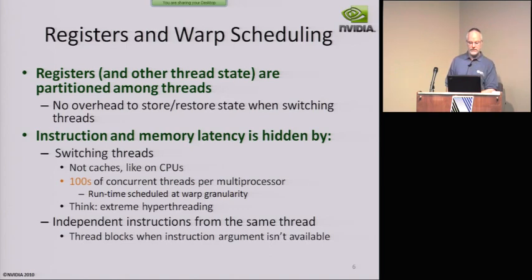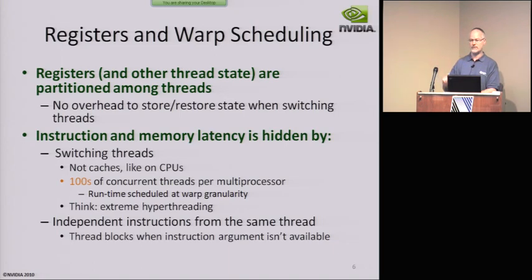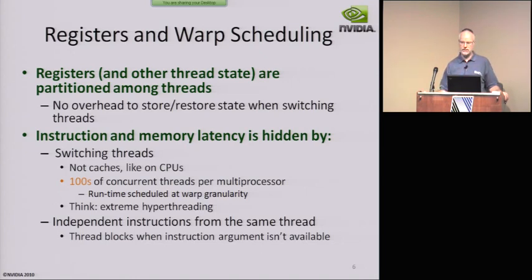We do this to hide all the uncontrolled latency in the compute pipeline. Instruction latency and, more importantly, memory latency to external DRAM is all hidden by our ability to switch threads with zero overhead. On a CPU, the whole architecture expects cache hits — the pipeline is optimized so that when you want to run the next instruction, its data is in cache or registers. In contrast, the entire GPU pipeline is architected for cache miss.